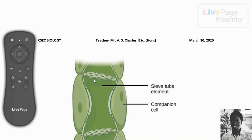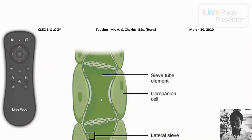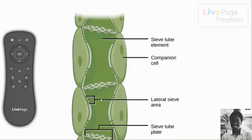Although they are living, sieve tube elements have no nucleus. Each sieve tube element has very few organelles and little cytoplasm, surrounding a very large vacuole containing cell sap. The cell sap is what the nutrients or food materials dissolve in for transport.